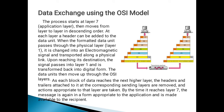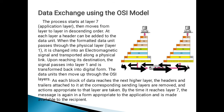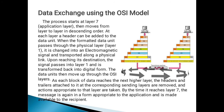The data exchange process starts at layer 7, the application layer, then moves from layer to layer in descending order. At each layer, a header can be added to the data unit. When the formatted data unit passes through the physical layer, it is changed into an electromagnetic signal and transported along a physical link. Upon reaching its destination, the signal passes into layer 1 and is transformed back into digital form. The data units then move up through the OSI layers at device B.